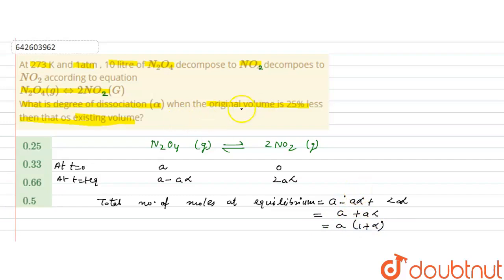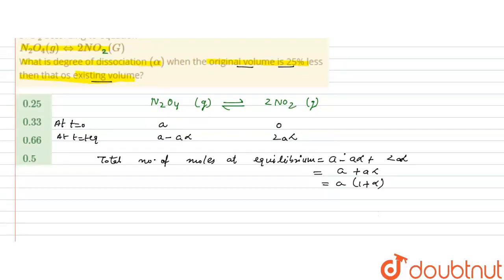One thing is given that the original volume is 25% less than that of the existing volume. Let the volume at equilibrium be V liters. The V original is 25% less, which means V minus 25%, that is 25 by 100 of V, which is V minus 0.25 V. So original volume is 0.75 times the volume at equilibrium.